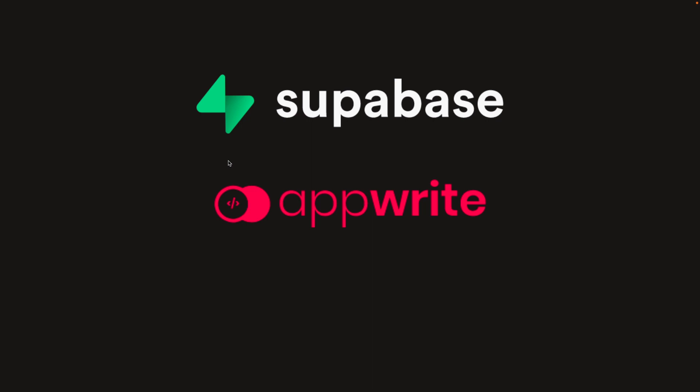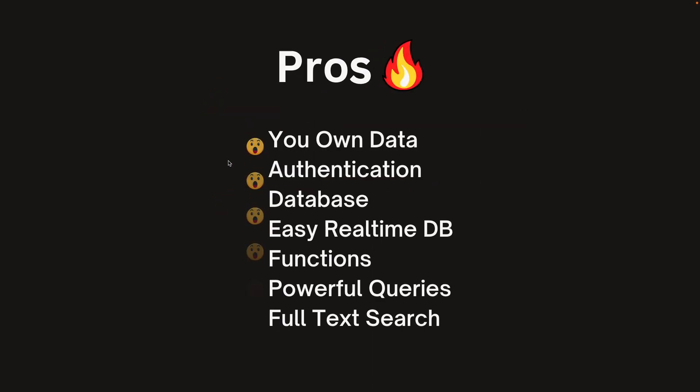As a beginner, using a client SDK is going to be much simpler, and these are all easy, powerful, and widely used. Supabase and Appwrite share similar pros: you own your data, meaning you can self-deploy and host on your own server. They both provide authentication, database, real-time database support, and functions for custom code. They also have powerful query support — something that lacks in Firebase — and full-text search by default, so that won't be an issue either.